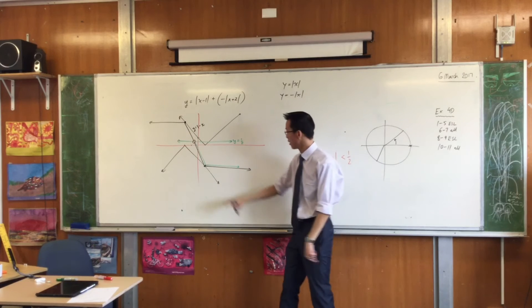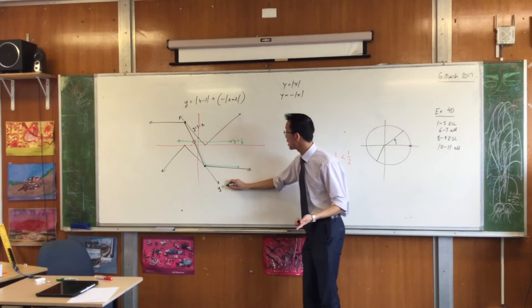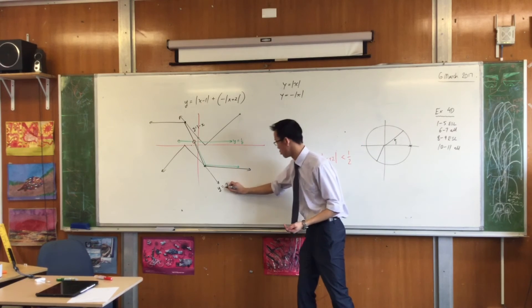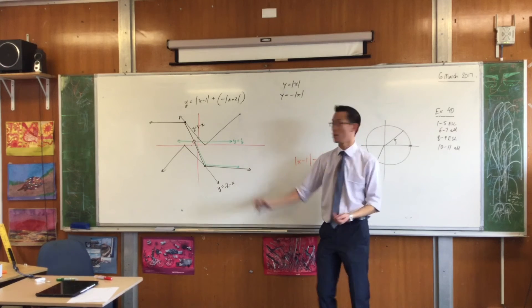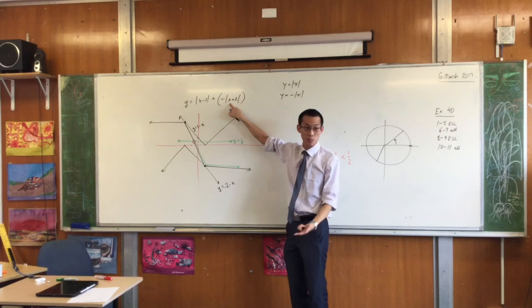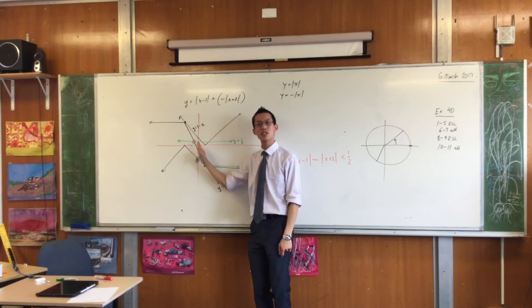This one over here must, by the same logic, be 2 minus x. Do you agree? Sorry, minus 2 minus x. Does that make sense? Do you see where I got that from? It's got to be the one sloping down. It can't be x plus 2. It must be the negative version.